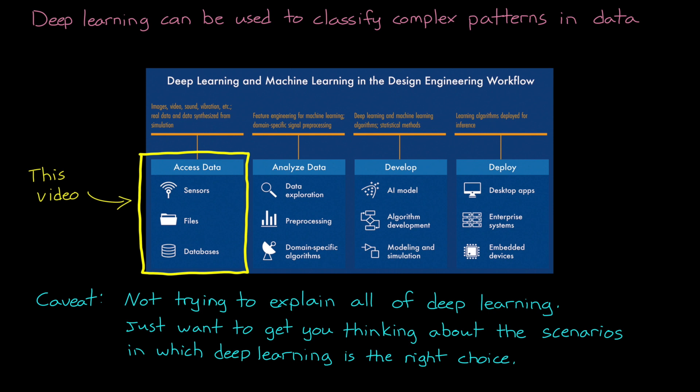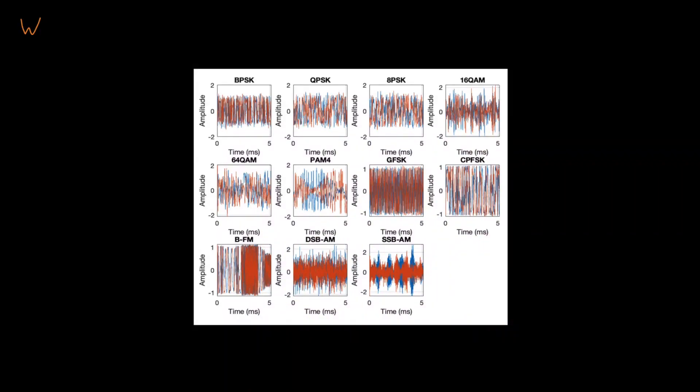And part of making that decision comes down to the type and amount of data that you have access to. And to ground this conversation with some realism, we're going to use a practical engineering example, which is waveform identification in radar and communication applications. And that's a mouthful. But if you stick around, I'll explain what that means and how access to data and deep learning can play an important part in solving this problem.